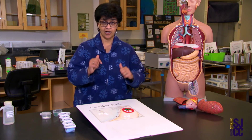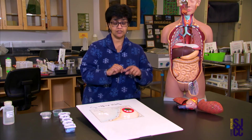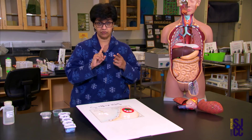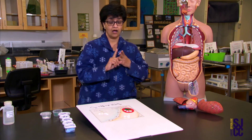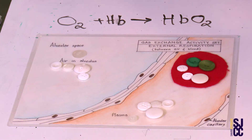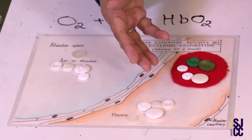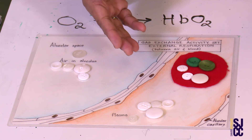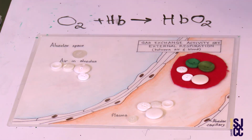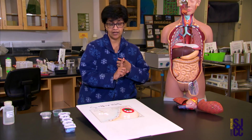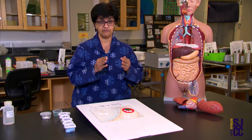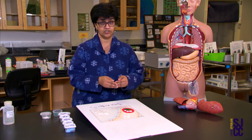We are warm-blooded organisms — we need to maintain our body temperature, and that costs a lot of energy. So we need to make a lot of ATP, which means we need a lot of oxygen in our blood. That is why we have hemoglobin: its role is to maintain the concentration gradient and prevent equilibrium of oxygen.